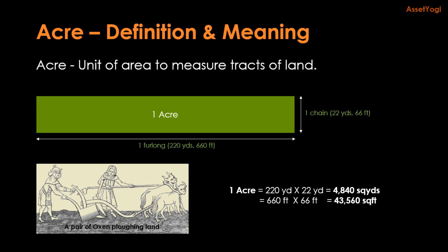Let us first understand the meaning of an acre and its historical context. An acre is a commonly used unit of area which is used to measure large tracts of land. In middle ages, an acre was defined as the amount of land that could be plowed by one man behind a yoke of oxen in a day, as you can see in this picture.